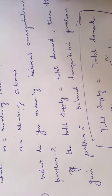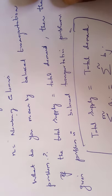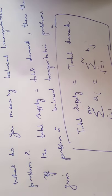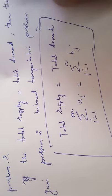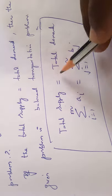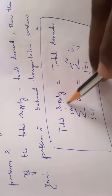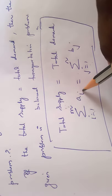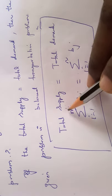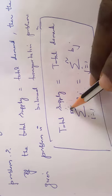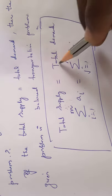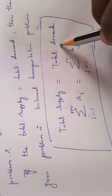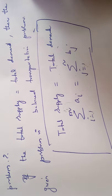Question number 4: What do you mean by a balanced transportation problem? A balanced transportation problem means total supply equals total demand. Mathematically: Σ (i=1 to m) a_i = Σ (j=1 to n) b_j, i.e., a₁ + a₂ + a₃ + ... + aₘ equals b₁ + b₂ + b₃ + ... + bₙ. Total supply equal to total demand is known as a balanced transportation problem.